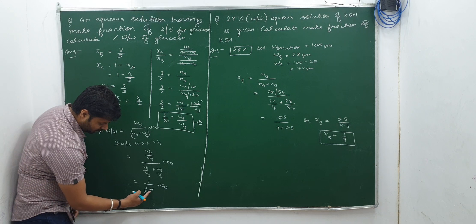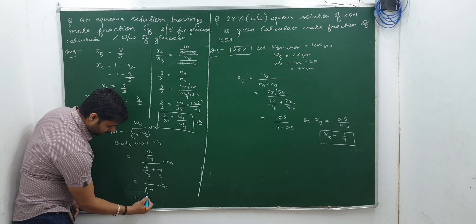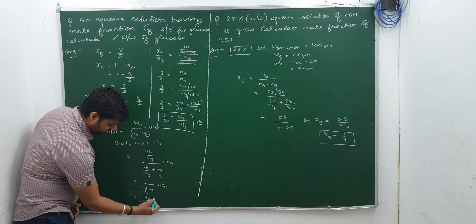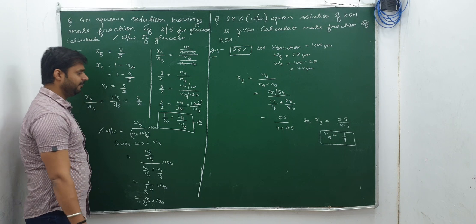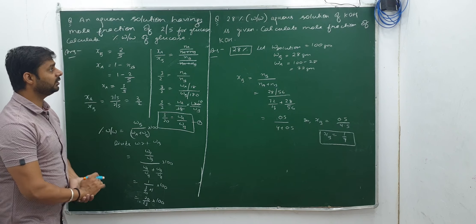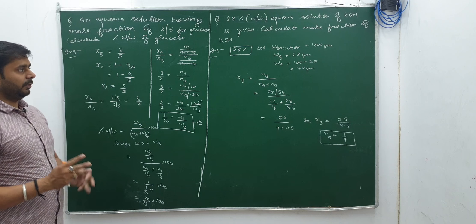That equals 1 / (3/20 + 1) × 100 = 20/23 × 100. Rest you will solve by yourself. I think you understood my point. In three questions: first we were given values to use directly; second, given mass percentage to find mole fraction; third, given mole fraction to calculate mass percentage.